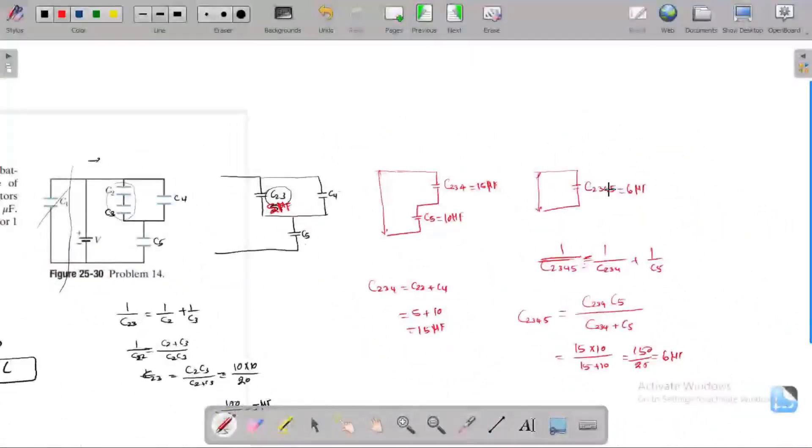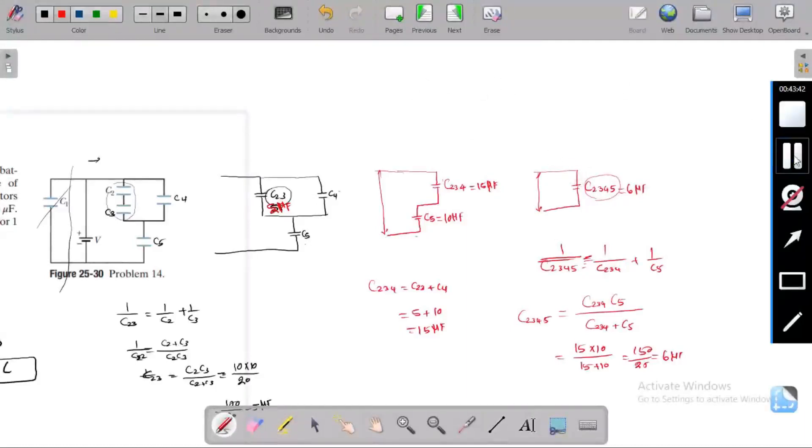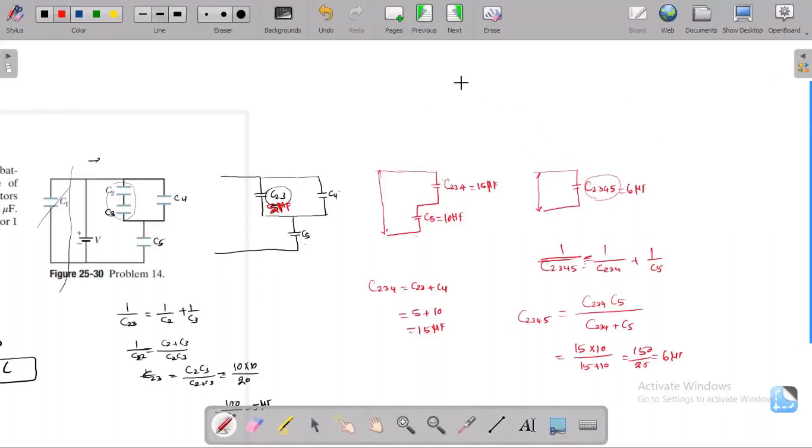In the combination C2345, it is a series combination. I am rearranging this in this form, converted into series combination. C234 equals 15 microfarads, C5 equals 10 microfarads. For series combination, the charge is the same on all components.